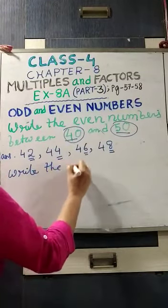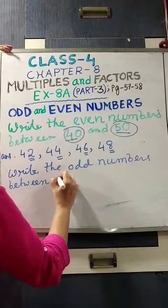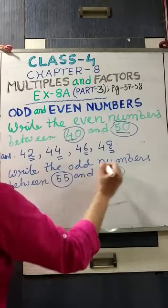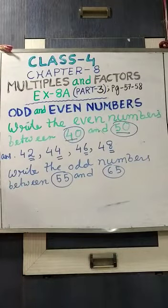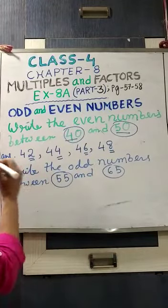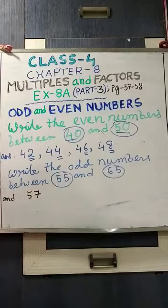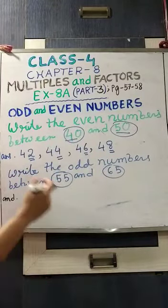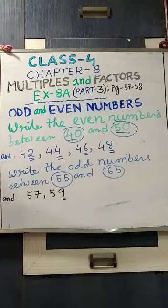Now, write the odd numbers between 55 and 65. That means we will not take 55 and 65 — we start after 55 and finish before 65. Odd numbers have 1, 3, 5, 7, 9 as odd digits in one's place. After 55 comes 56 — 6 is an even digit, we cannot take 56. After 56 comes 57 — last digit is 7, an odd digit, so 57 is an odd number. Then 58 — last digit is 8, an even digit, we cannot take it. Then 59 — last digit is 9, an odd digit, so we will take 59.